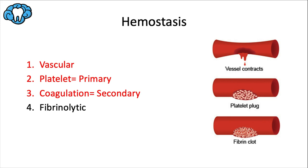Before we get to INR and platelets, first we need to talk about how clotting happens. Let's say you get cut and the blood vessels in that area are also injured. To prevent your blood from just spilling out uncontrollably, there are four phases of the hemostasis process — this means stopping blood. The first phase is vascular, which involves vasoconstriction where the affected vessels physically contract. Next is the platelet phase, which involves a platelet plug where platelets rush to the area — this is considered primary hemostasis. Third is coagulation, which involves a fibrin clot — a mesh of fibrin material that holds the platelet plug together — considered secondary hemostasis.